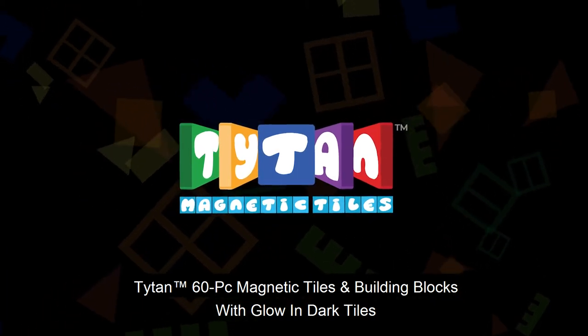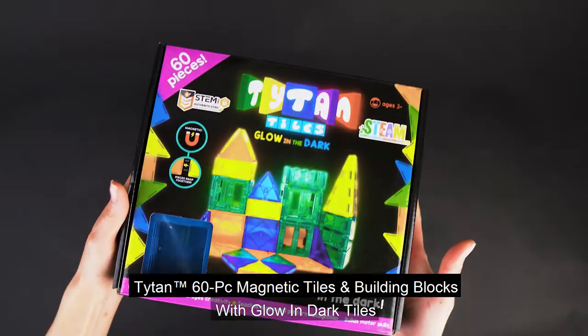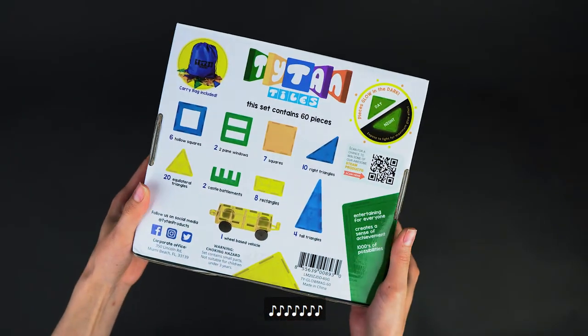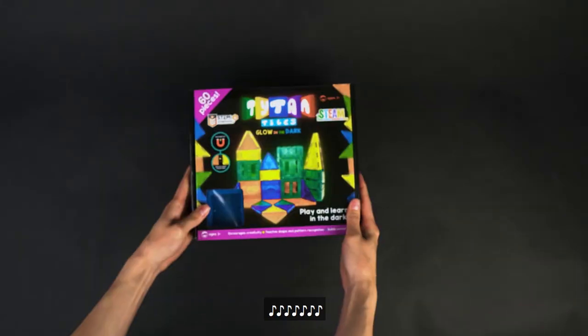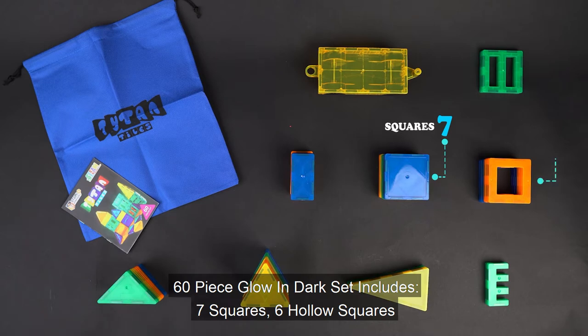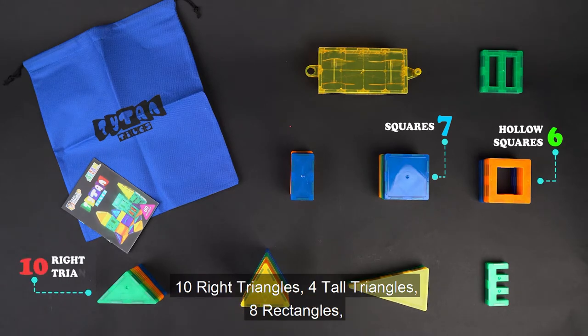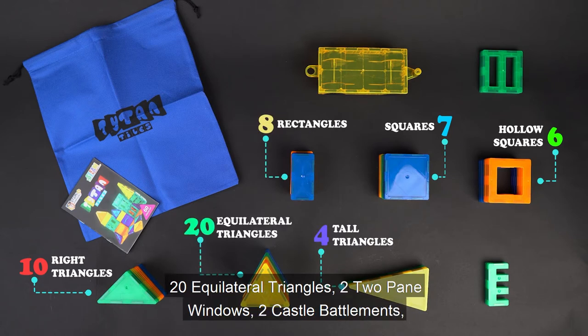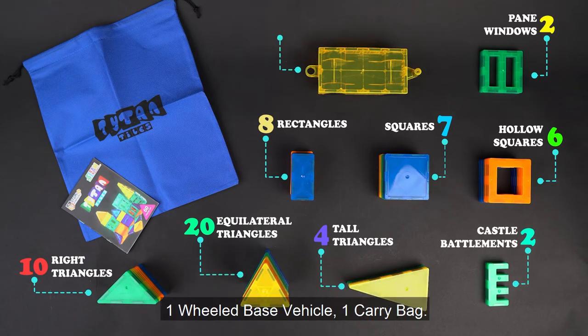Titan 60-piece Magnetic Tiles and Building Blocks with Glow-in-the-Dark Tiles. The 60-piece glow-in-the-dark set includes 7 squares, 6 hollow squares, 10 right triangles, 4 tall triangles, 8 rectangles, 20 equilateral triangles, 2 two-pane windows, 2 castle battlements, 1 wheeled-based vehicle, and 1 carry bag.